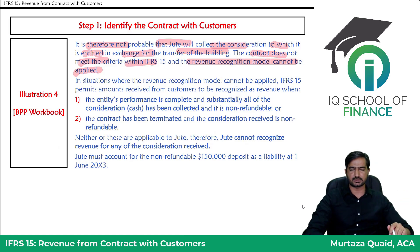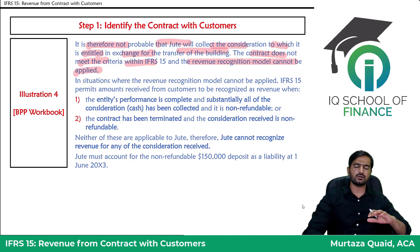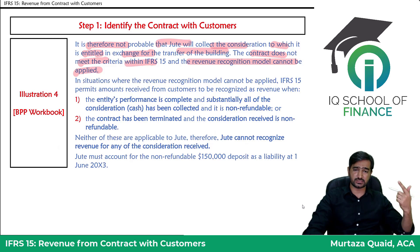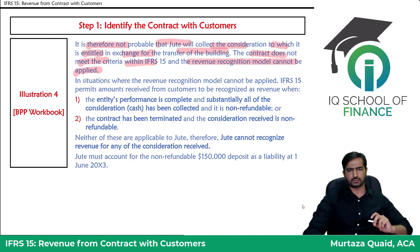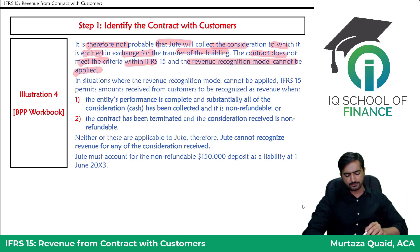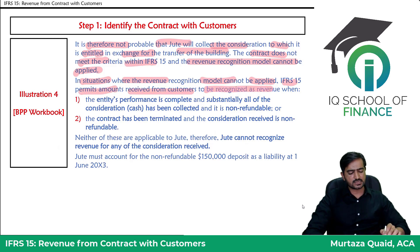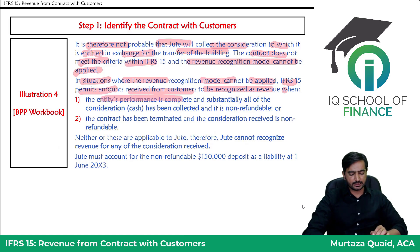Moving to the second requirement — accounting for the deposit. If the contract criteria are not met, we wait and reassess. Under IFRS 15, in situations where the revenue recognition model cannot be applied, amounts received from the customer can only be recognized as revenue when: either the performance obligation is complete, the consideration is received, and it is non-refundable; or the contract has been terminated and the consideration received is non-refundable.